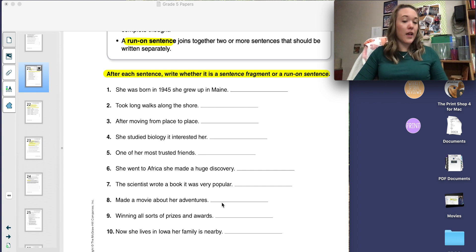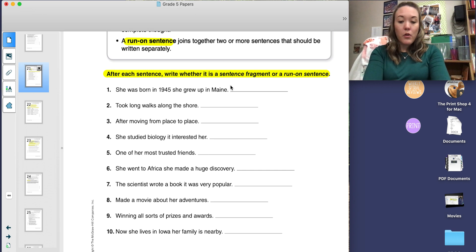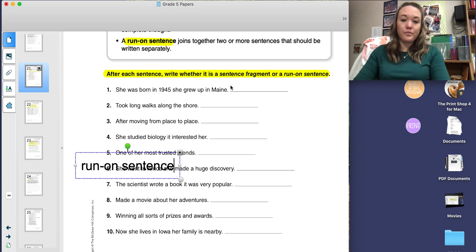Let's do two together. Number one says, she was born in 1945, she grew up in Maine. I noticed that this sentence is a run-on. It could be separated into two sentences. I could make it a compound sentence, but I have two subjects here and two predicates. So I'm going to write run-on sentence on the line.